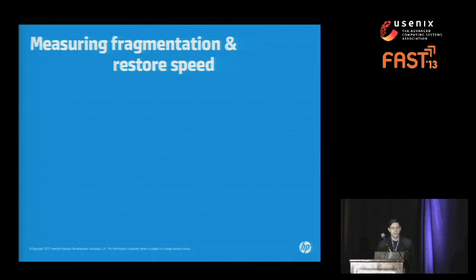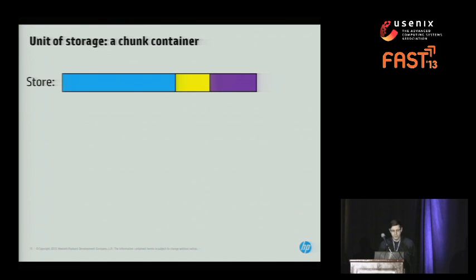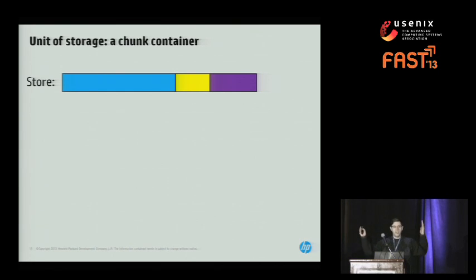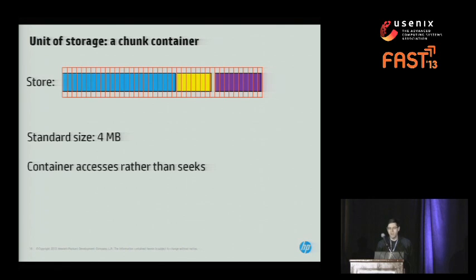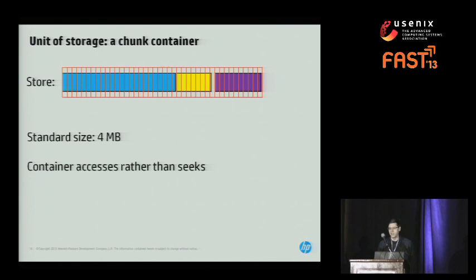Before I tell you about our approaches to improving restore speed, I need to tell you how we measure fragmentation and restore speed. I showed you a single linear piece of storage as if we stored all the chunks in a single giant file, but for various reasons people don't actually do this. What they actually do is divide it up into small discrete files — about four megabytes long, per the literature. So it's not so much that we're doing random seeks in a giant large file; it's that we're doing lots of different container accesses.